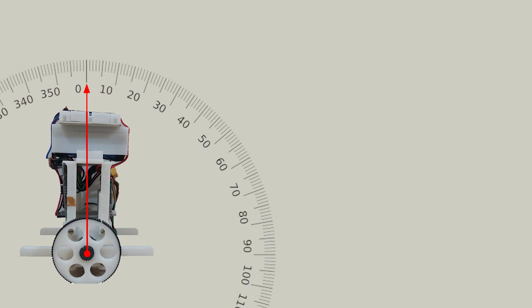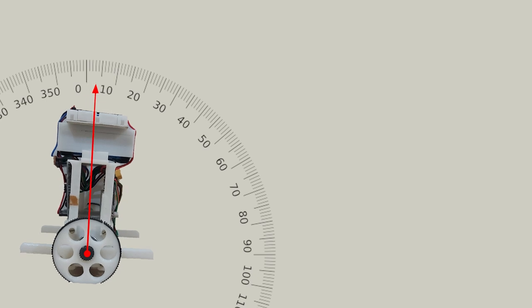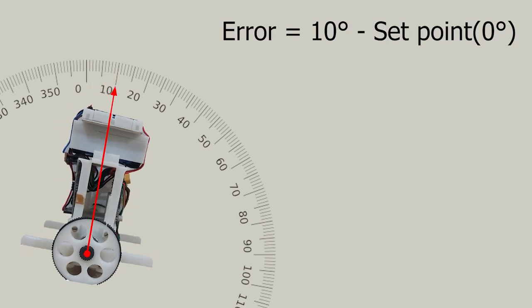At the beginning, if the robot is tilted—let's say ten degrees to the right—we have an error of ten degrees. To balance the robot, we need to generate an appropriate actuated signal based on this error. Here we can use a PID controller.